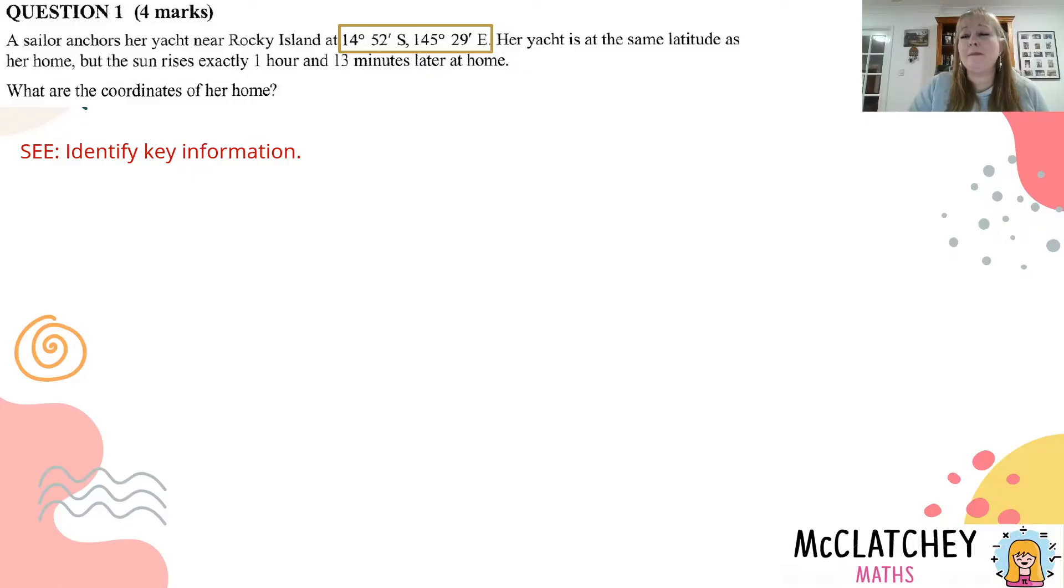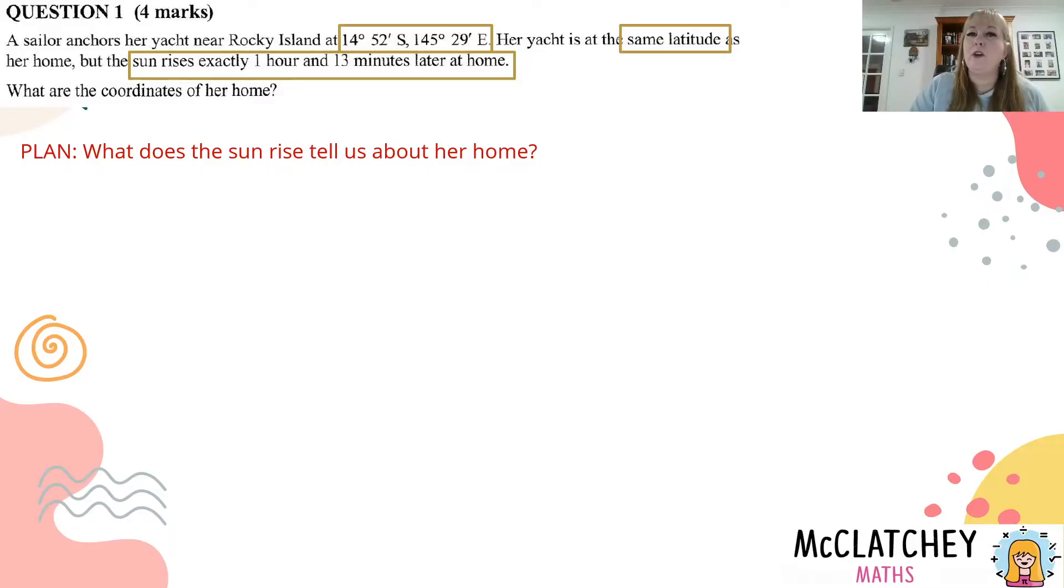Also we have some information about the latitude. The yacht is at the same latitude - that's pretty important. And we've got some information about the sunrise. So what does the sunrise tell us about her home? It tells us that her home is west of the yacht, because if the yacht is getting sunrise first and home is getting it later, then that means the yacht is in the east and the home is in the west.